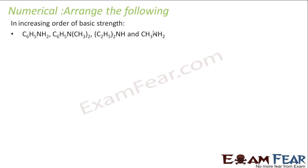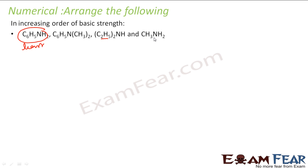Now we have to arrange in the order of basic strength. I have C6H5NH2 — this is least basic. Again, this is C6H5NH2 with CH3 groups attached to nitrogen — that will also be less basic. These two have alkyl groups (aryl vs alkyl): alkyl means they have to be more basic. Out of the two alkyl amines, one has two ethyl groups and one has one ethyl group.